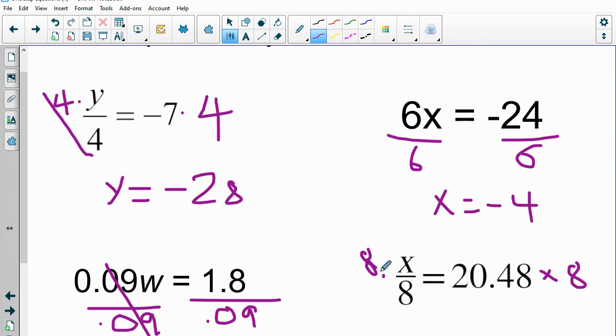And then on this last one, we're going to have 20.48 times 8. Let's grab that calculator again. Pull it over out of the way. 20.48 times 8. So that would be 163, 163.84.